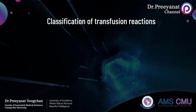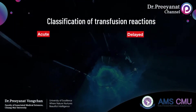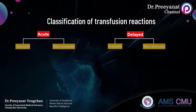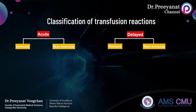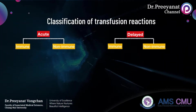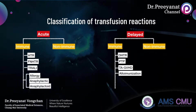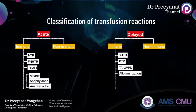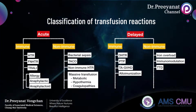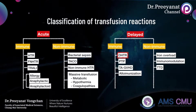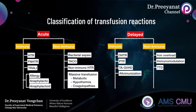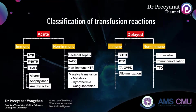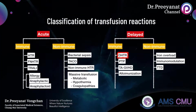Transfusion reactions can be classified into two main groups — acute and delayed — depending on the onset of the reaction. Both groups are also divided into immune and non-immune mediated based on causes. Immune-mediated reactions mean that patients produce alloantibodies specific to red blood cells, white blood cells, platelets, or plasma, while non-immune mediated reactions are caused by other factors. Delayed Hemolytic Transfusion Reaction is classified as an immune-mediated delayed reaction, resulting from alloantibodies specific to red blood cell antigens following transfusions.